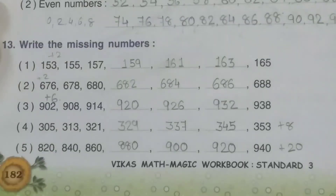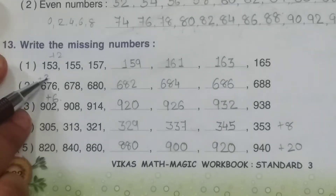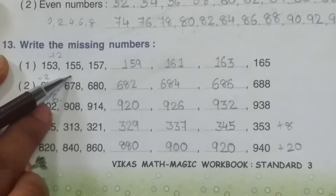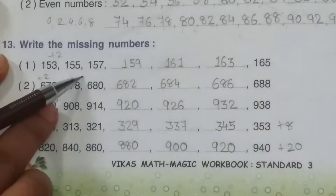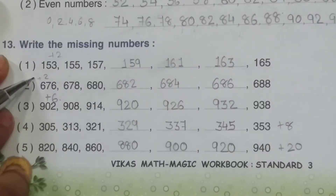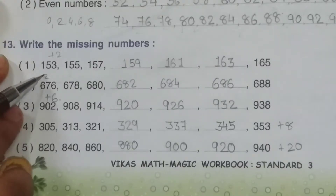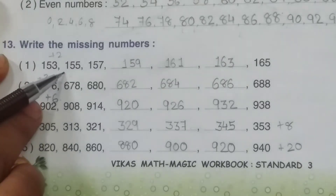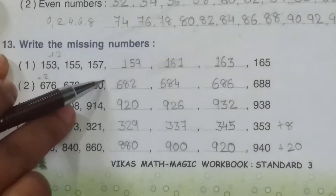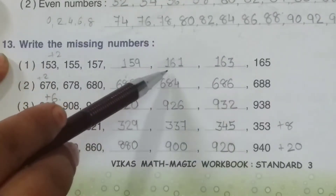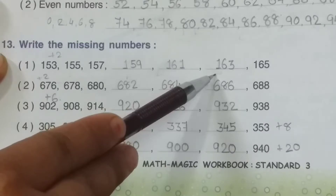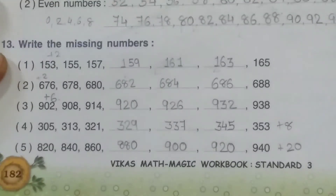Now we will see Main 13: Write the missing numbers. First one: 153, 155, 157. See the difference — the difference here is plus 2. Plus, because the numbers are increasing. So, 153 plus 2 = 155, plus 2 = 157, plus 2 = 159, plus 2 = 161, plus 2 = 163, plus 2 = 165.